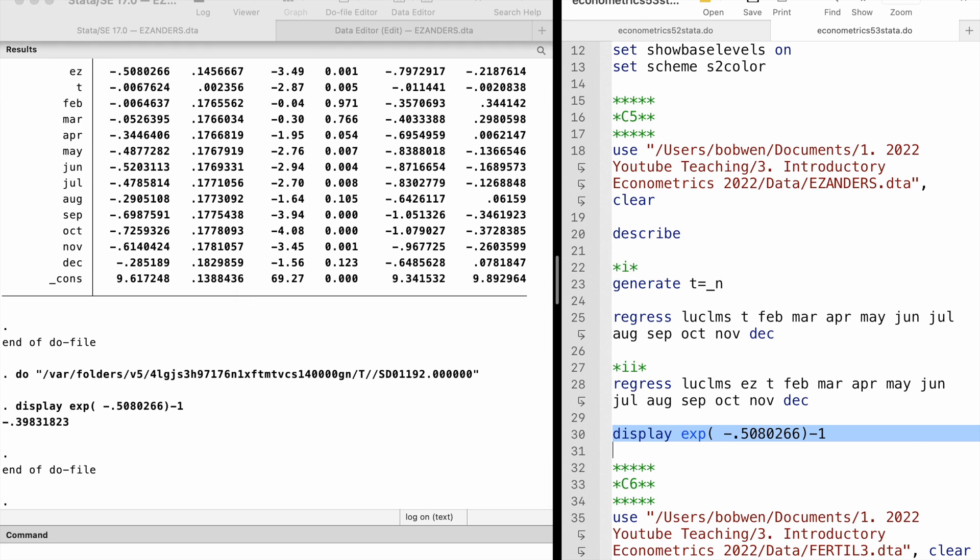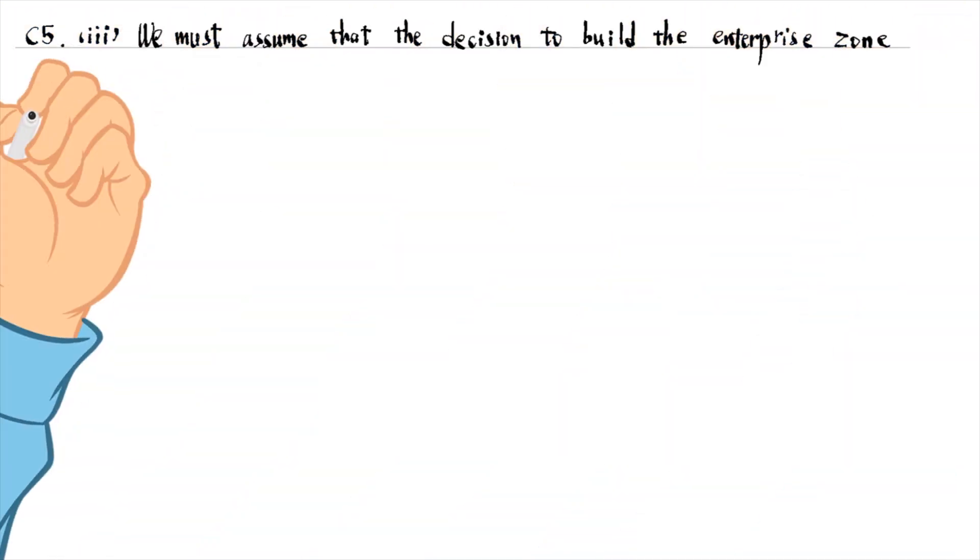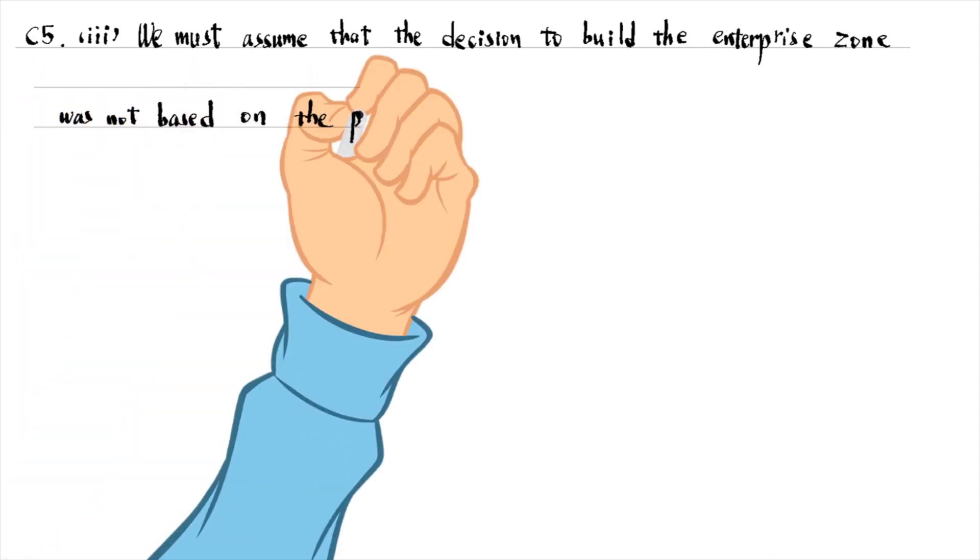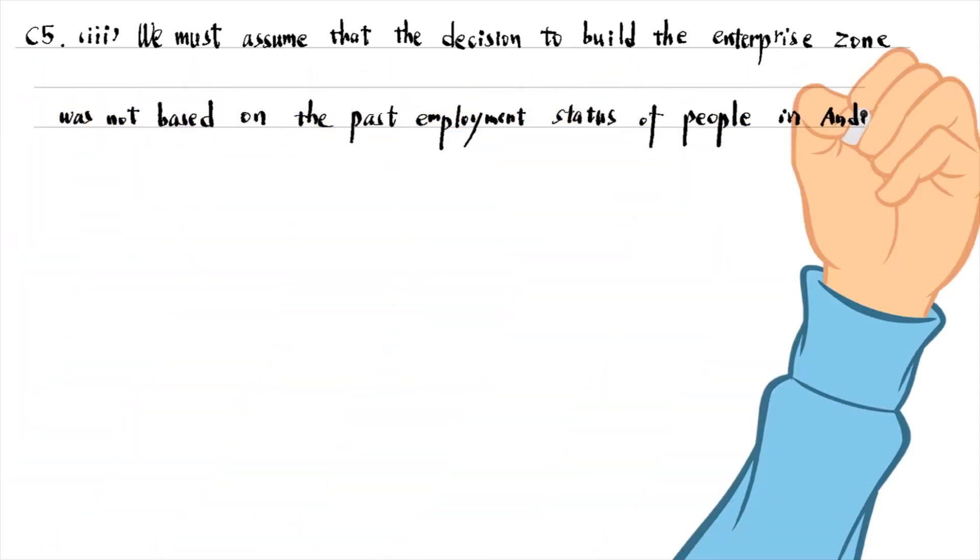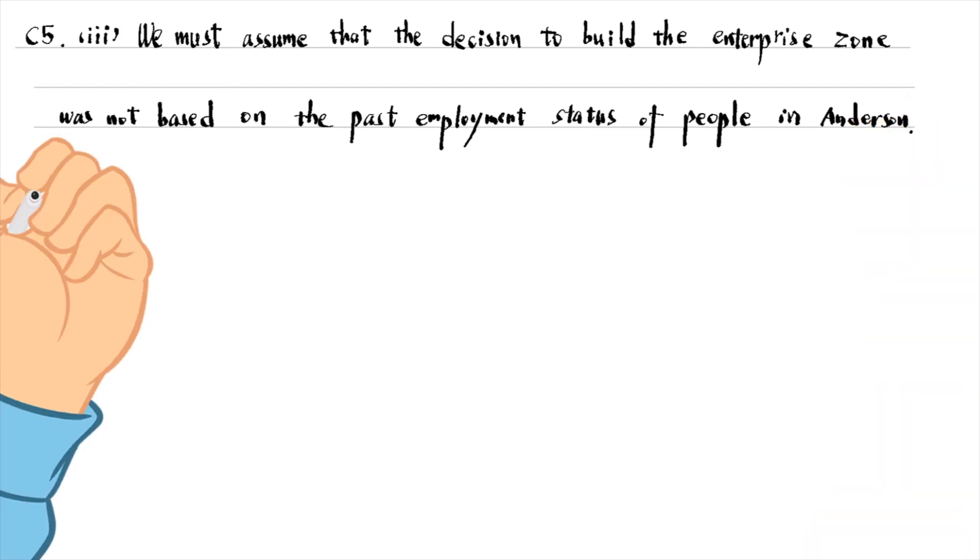In part 3, we must assume that the decision to build the enterprise zone was not based on the past unemployment status of people in Anderson. It is not likely the case.